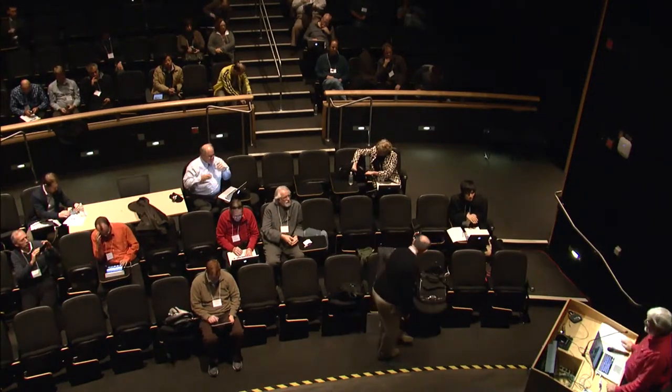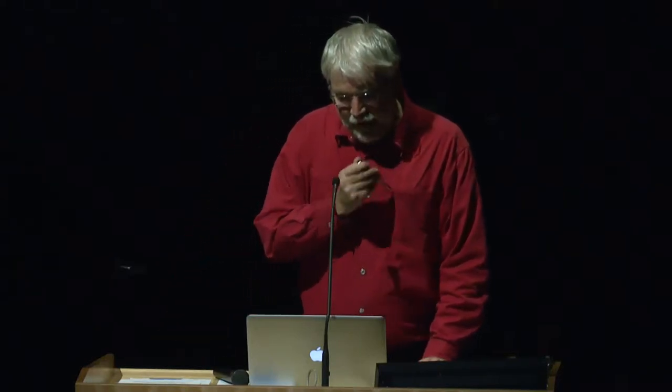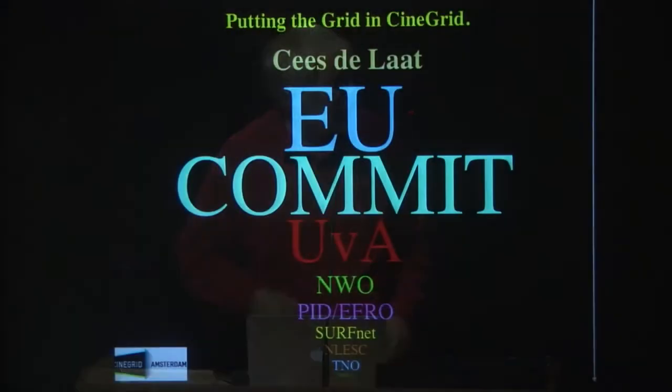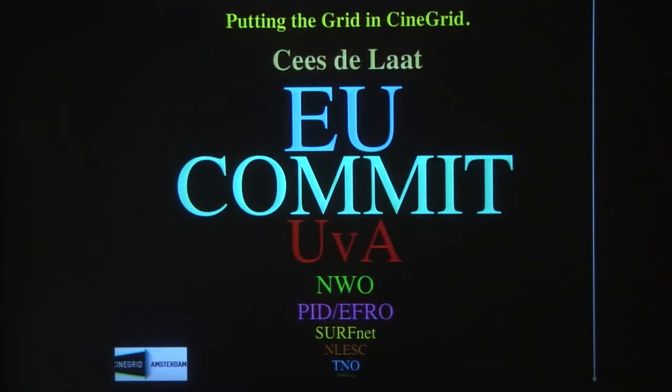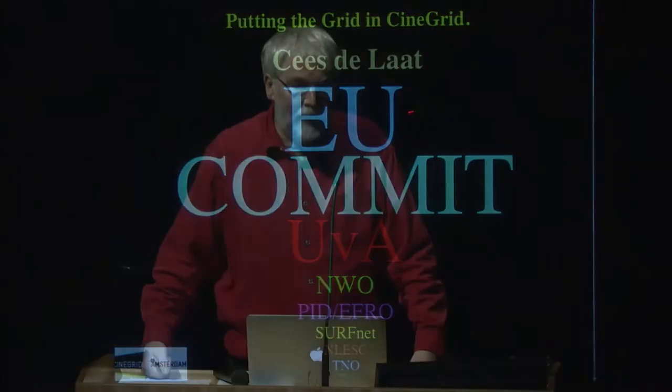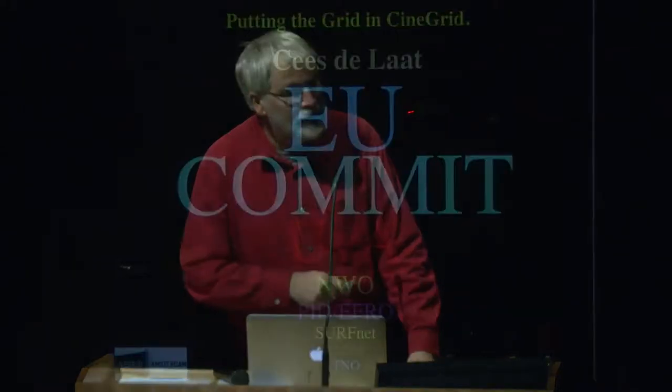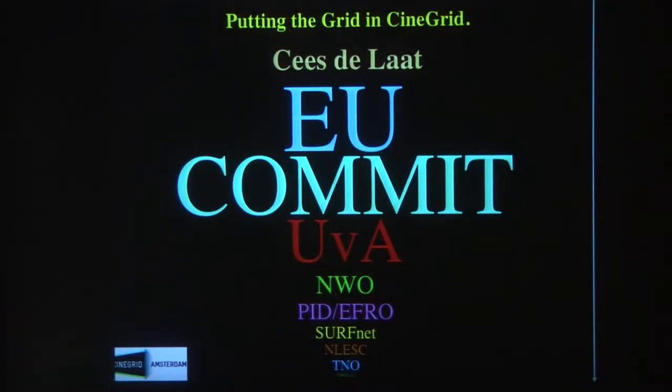Thanks for the introduction. In the next 48 minutes and 16 seconds, I'm going to entertain you about putting the grid under CineGrid. My affiliation is basically with the University of Amsterdam. I run a group of about 40 people now — to be exact, 42 — which is the answer to everything in the Guide to the Galaxy, so if I hire somebody, I need to fire somebody now. These are actually funding organizations funding my group, and the font size is proportional to the funding I get from those organizations.